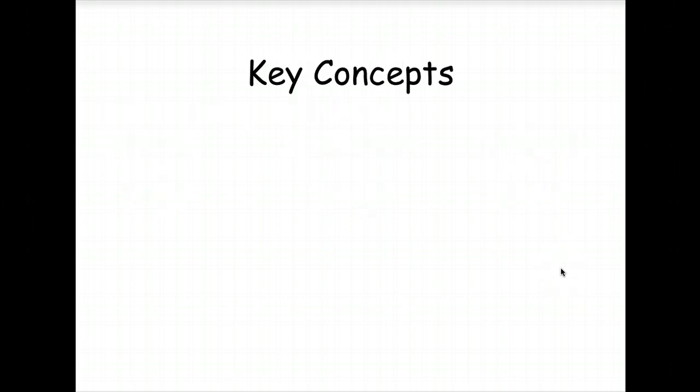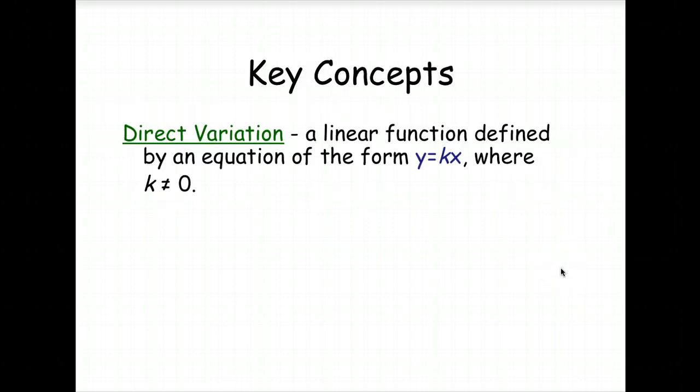So now for the key concepts in this lesson. Direct variation is a linear function defined by an equation in the form Y equals KX, where K is not equal to zero. The constant of variation is K, where K is equal to Y over X, Y divided by X.